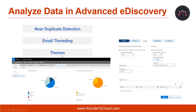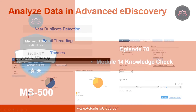Finally, themes analyze documents with text in a working set to parse out common themes that appear across the documents. The theme that appears most prominently in a document is designated as its dominant theme.